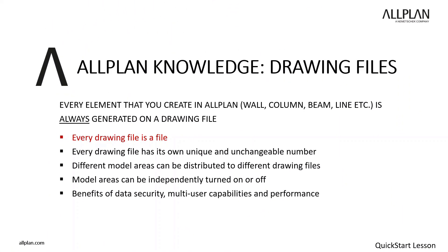Now we can add the drawing files into the stories. What exactly are drawing files? These are physical files where we'll be modeling the structure and elements. Instead of having to open each file individually, ALLPLAN stores all these files internally within the project. Every drawing file has its own unique and unchangeable number. Not only can you place different stories in separate files, but you can also subdivide stories and place elements on their own unique files. The ability to distribute the components of a building model to different drawing files is a very powerful tool that is unique to ALLPLAN. The individual files can be independently turned on and off, making it easy for multiple people to work on the same project. Another benefit of this file structure is the increased performance, because your computer only has to calculate and display parts of the model that you're actively working on.